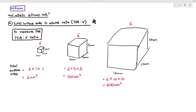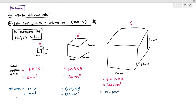The next thing we have to do is calculate the volume of each cube. The first cube has a volume of 1mm³, the second one is 125mm³, and the third one is 1000mm³. Notice that even though total surface area increased, the volume increased at an even more exponential rate.